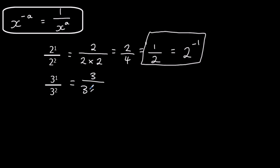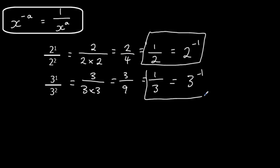Same thing with three: three divided by three times three is three ninths, which is the same as one third. And from the rules of indices, one take away two is minus one. Again, this will work for any number, so a negative power means one over, or it means flipped over.